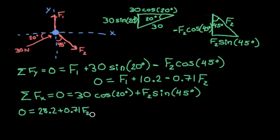Then we have an equation with just one variable, so now we can solve for F2. And we'll get F2 equals negative 39.7 Newtons.